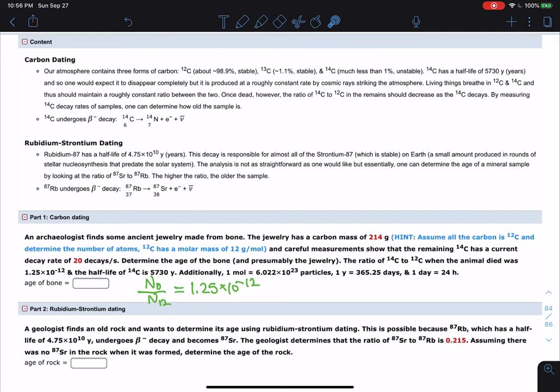In this particular problem, the assumption here that we're making is that there is no strontium-87 in the rock when it was formed. Now, that's a big assumption, but we're making it to simplify so we can go through and do the problem. But it's important to realize what this means.